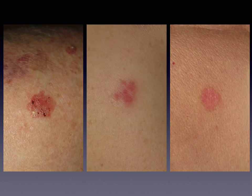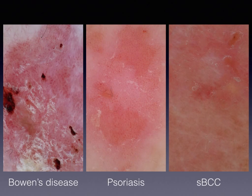This is very useful information for the clinical practice and for the differential diagnosis between superficial BCC and other clinically similar entities such as Bowen's disease and psoriasis. Both Bowen's disease and psoriasis display not linear but dotted vessels — larger in Bowen's disease, the so-called glomerular vessels, or smaller in psoriasis. Instead, superficial BCC displays few or more vessels of linear morphology.